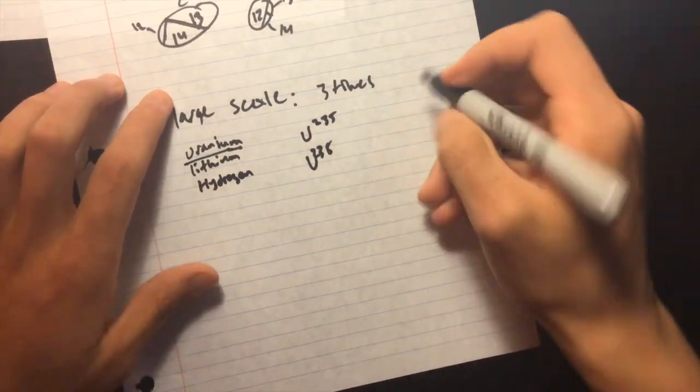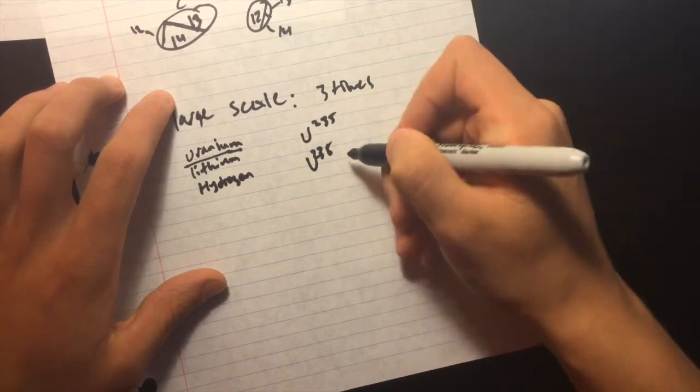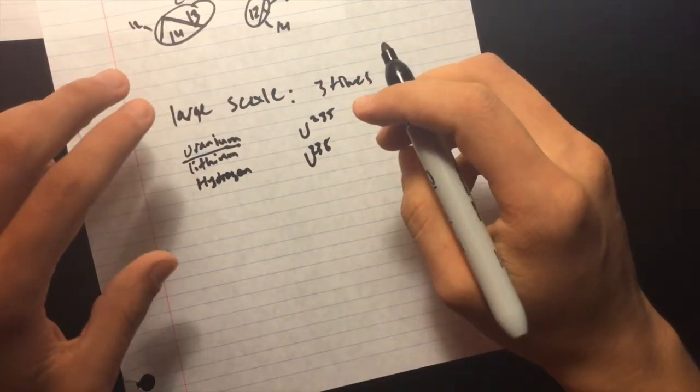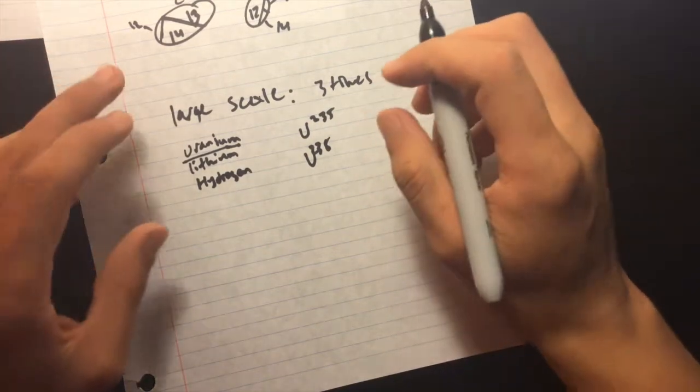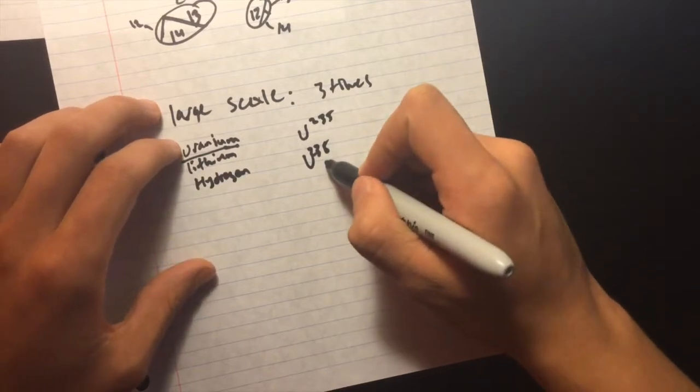Uranium-235 is less than 1% as common as uranium-238. So, if we have a mass of uranium, a very, very small amount of it is going to be uranium-235, while the rest of it will be uranium-238.